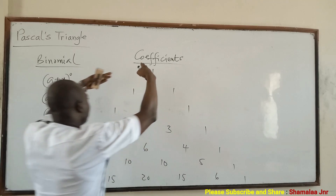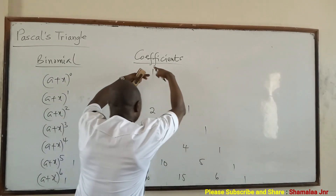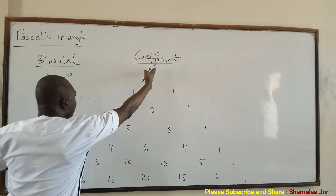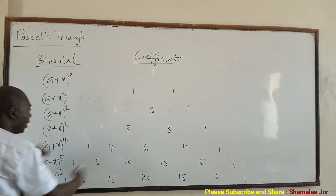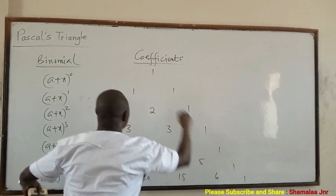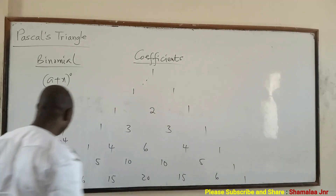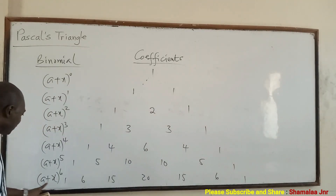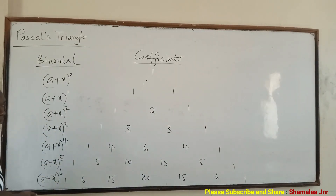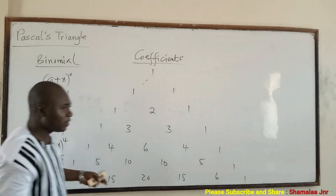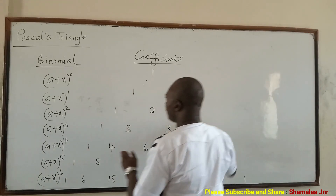So the triangle will just move on and go like this. If we say (e + x) raised to the power 7, the pattern will continue. So this is Pascal's triangle, and these are the coefficients.